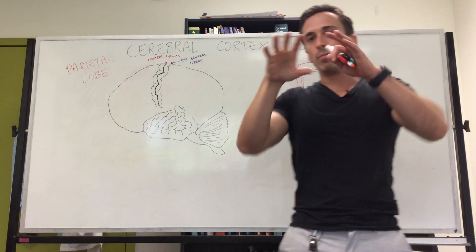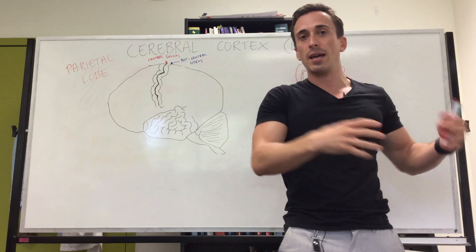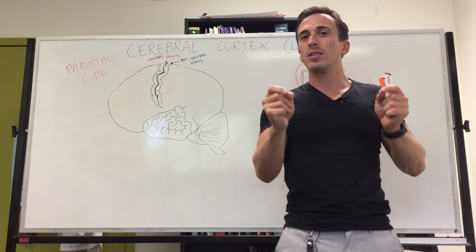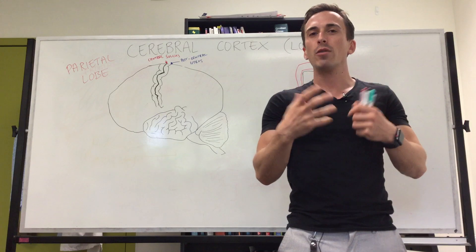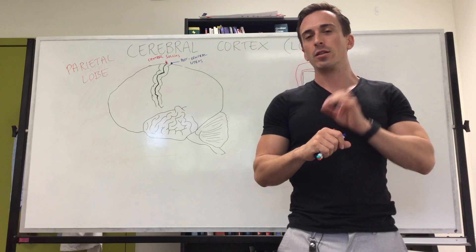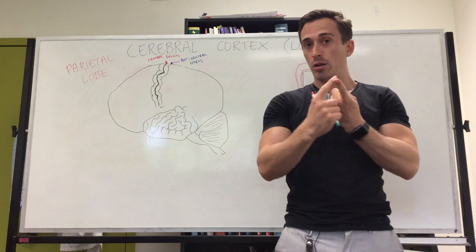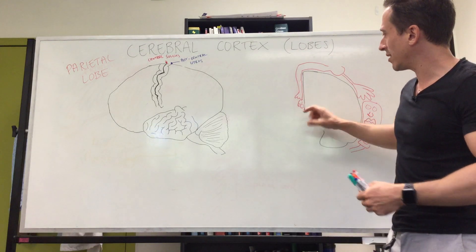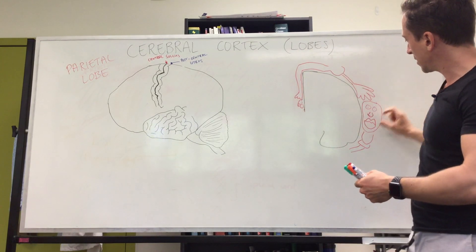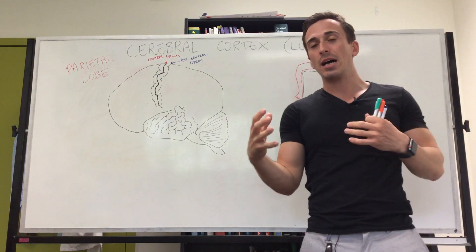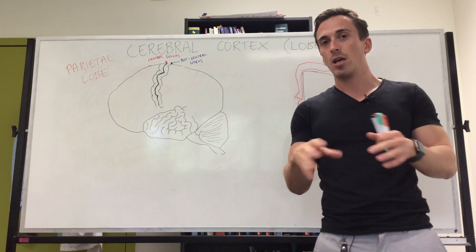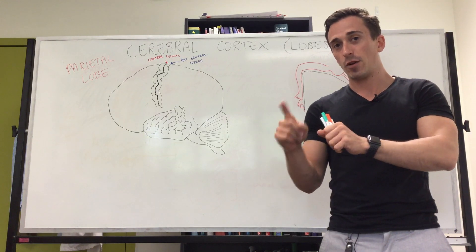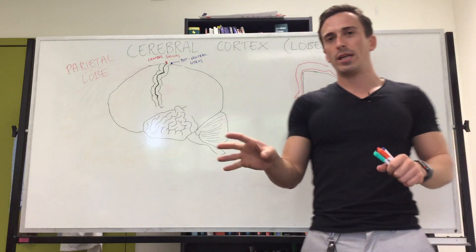Just like with the motor cortex, the amount of somatosensory cortex dedicated to a body part doesn't depend on the size of that area — it depends on how many sensory neurons are present. Areas very sensitive to touch, like the genitals, hands, lips, and tongue, are represented quite large in the somatosensory homunculus because there are more sensory neurons dedicated to those parts.